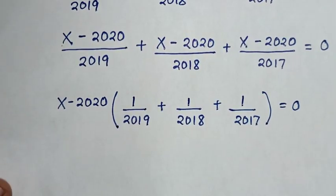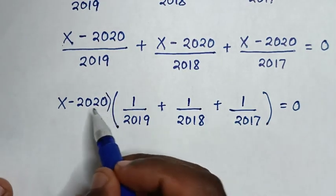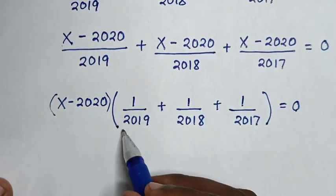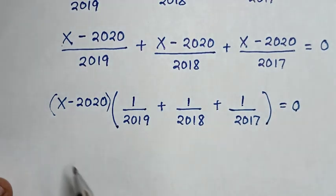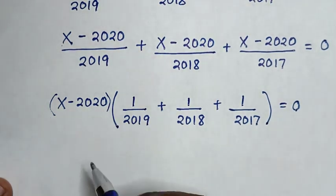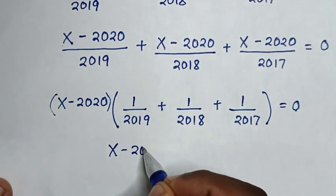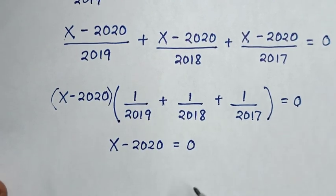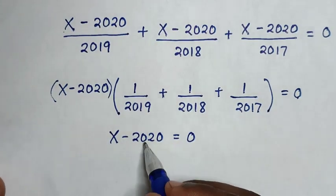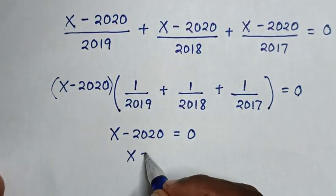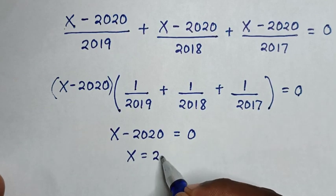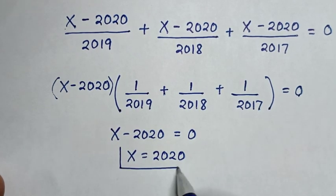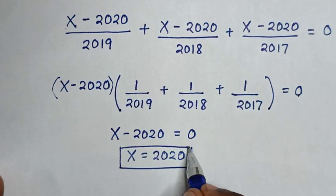From here we have two solutions: (x minus 2020) equals 0, or the bracket equals 0. To find the value of x, it will be x minus 2020 equals 0, so x equals 2020. Therefore this is the value of x from our equation.